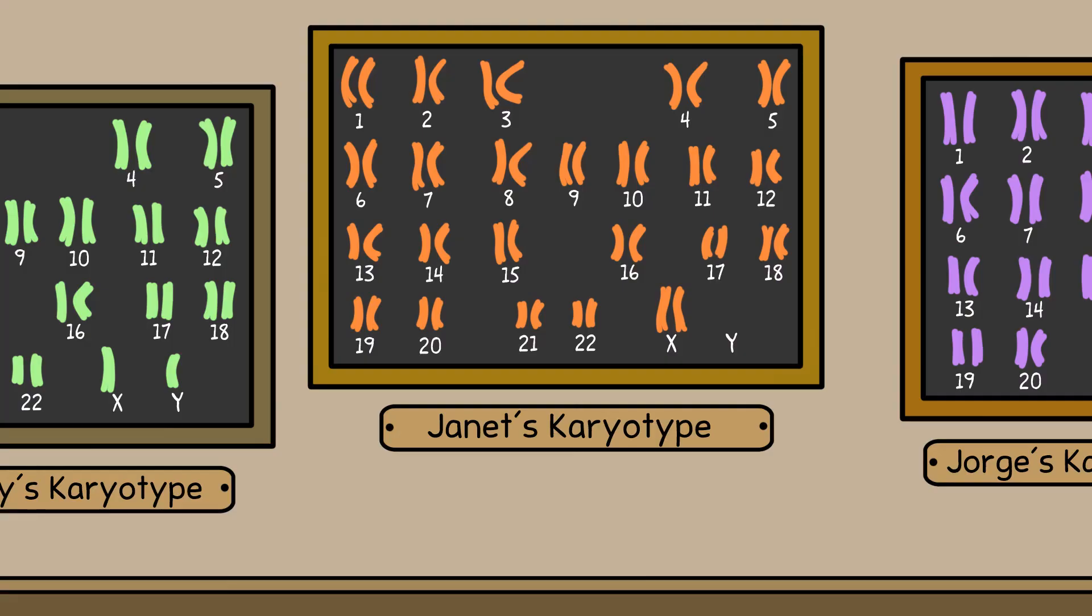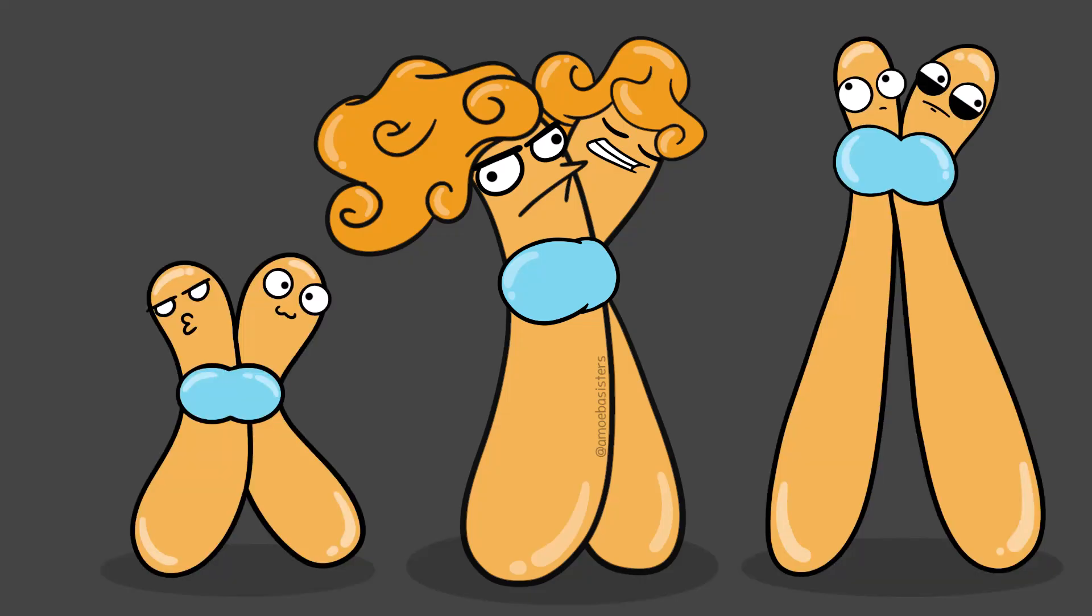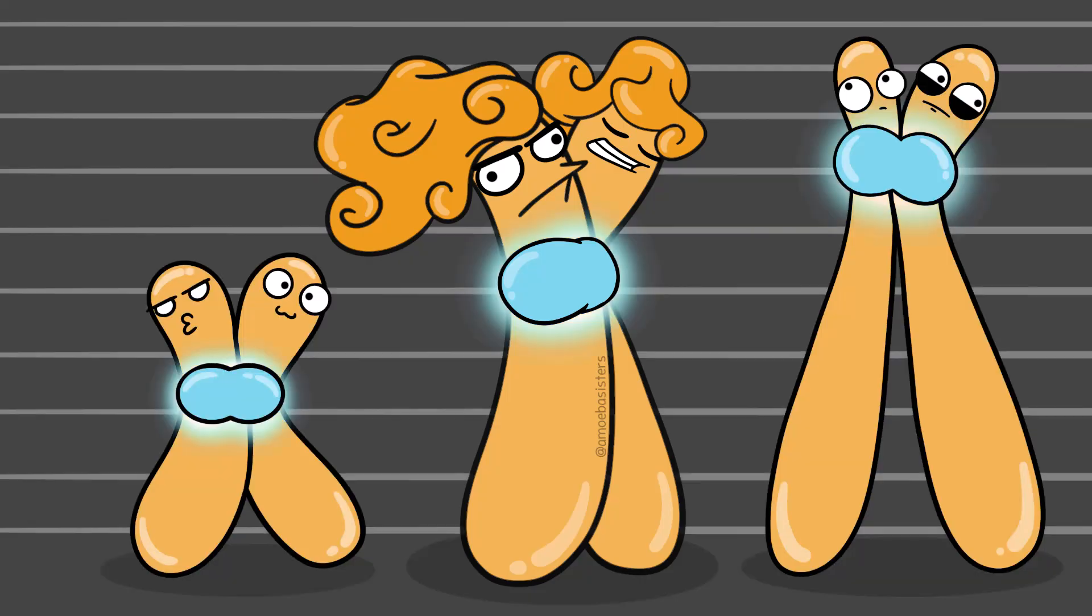So maybe you've seen pictures of all those human chromosomes before in a caption that reads, human karyotype. Karyotypes represent the appearance of an individual's chromosomes: the number of them, size, where the centromeres are.